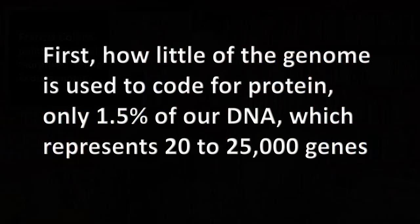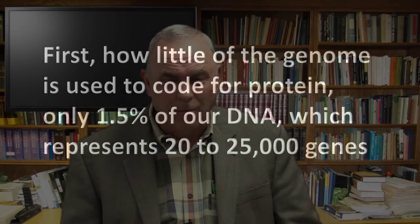Collins said there were surprises they weren't expecting to see. One of the surprises was how little of the genome is used to code for protein. At the time of the discovery in 2003, it was about 1.5% — only 1.5% of the human genome was actually used in the production of protein, representing only 20,000 to 25,000 genes. A gene codes for protein — that's what a gene is.